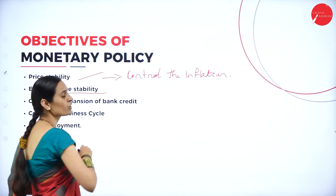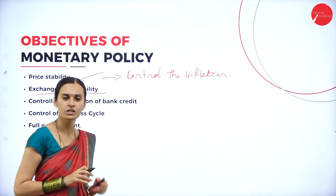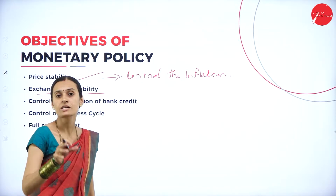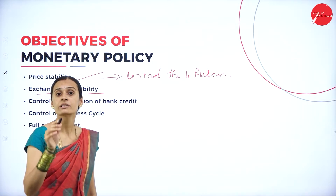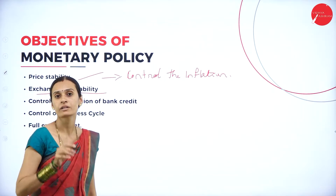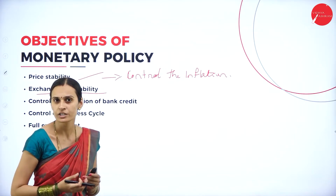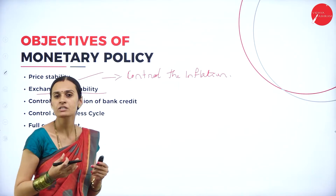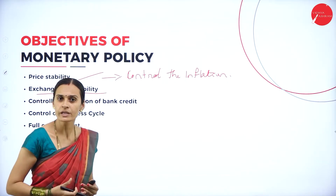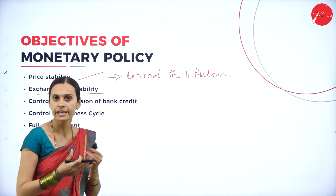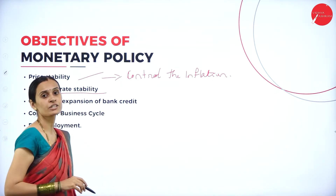The second objective is exchange rate stability, which belongs to foreign exchange. The rate of foreign currency is determined by RBI, which depends on the general price level of our country. The dollar rate will be increasing or sometimes decreasing. The rate depends upon the inflationary rate of our country. By following price stability in the economic system, RBI tries to maintain the exchange rate system.